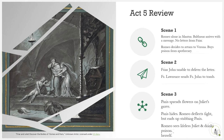Scene 1: Romeo discovers Juliet has died from his servant Balthazar and is devastated, saying, 'I defy you, stars.' He buys some poison from an apothecary and returns to Verona to visit Juliet's tomb. Scene 2: Friar John reveals to Friar Lawrence that, due to an outbreak of disease, he was quarantined in Verona. As a result, Romeo did not get the message letting him know that Juliet isn't really dead. Friar Lawrence worries and says, 'Unhappy fortune by my brotherhood. The letter was not nice, but full of charge of dear import, and the neglecting of it may do much danger.' He then quickly hurries to the Capulet tomb.